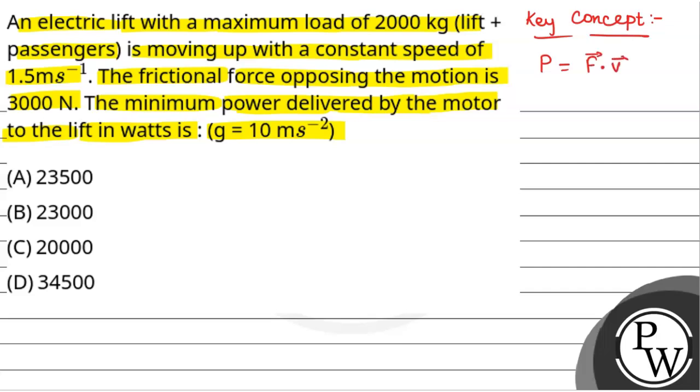Now we will see. Suppose this is the lift and this is lift plus passenger, and that has maximum weight which is 2000 kg.